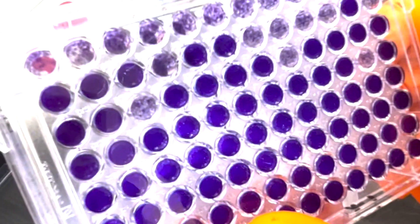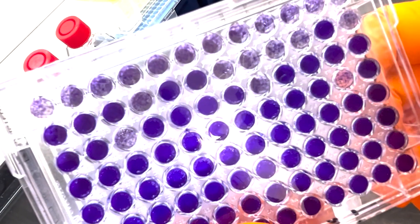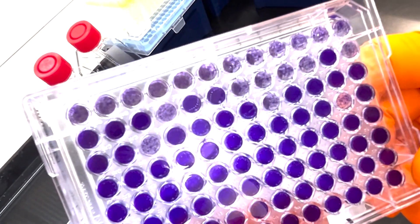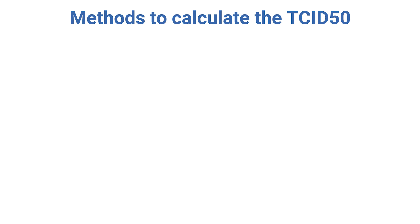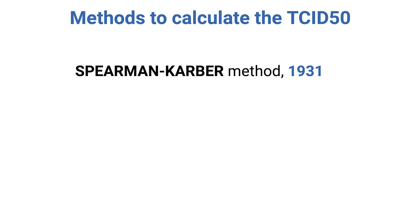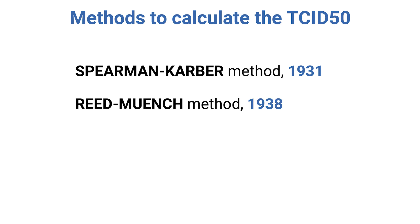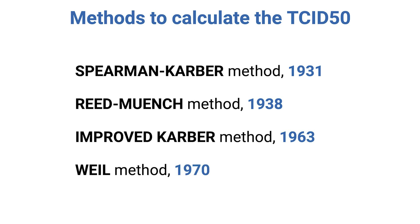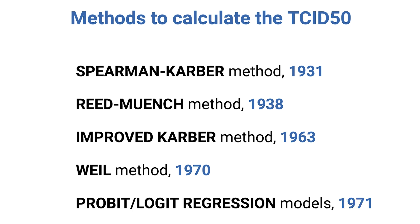Today, we will take a step further and explore the calculations used to determine viral infectivity measurements. Over the years, several methods have been developed to calculate the TCID50, which measures infectious viral titer. These include the Spearman-Kerber method from the early 1900s, the Reed-Muench method from 1938, improvements by Sun in 1963, the Weill method by Meinel and Meinel in 1970, and Finney's statistical models from 1971. Each method offers a unique approach to this crucial measurement.